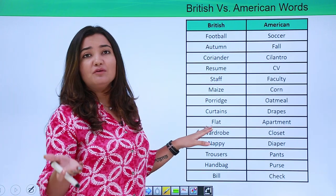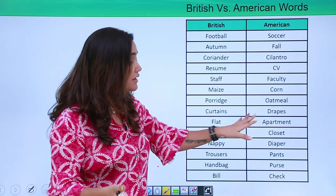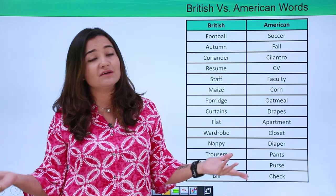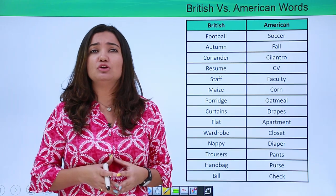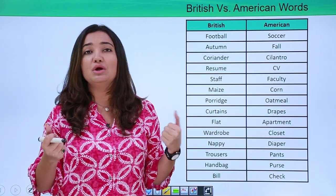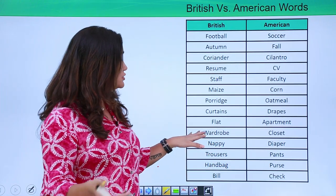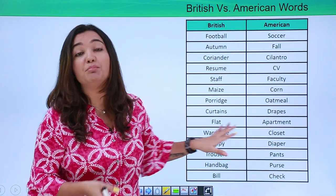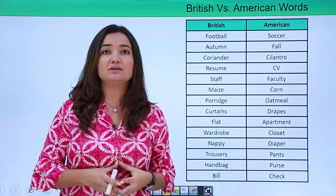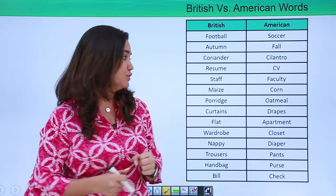A Brit would call it a flat whereas an American would call it an apartment. Not a big difference — just easy for you to judge which word to use where. How about wardrobe and closet? A Brit would call it a wardrobe whereas an American would call it a closet. Again, same meaning but different words.